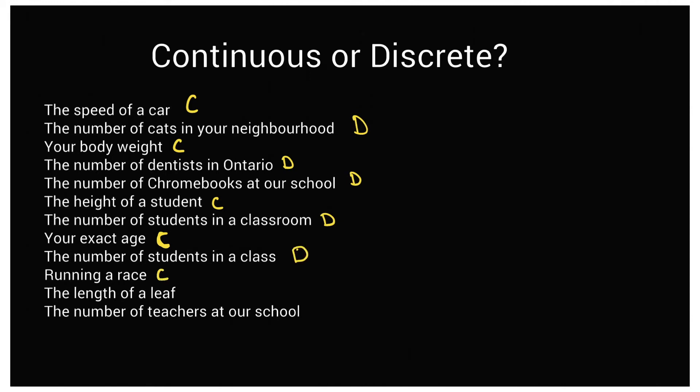Running a race would be continuous because you can measure it. The length of a leaf is continuous because you can measure it. The number of teachers at our school would be discrete because you can count them.